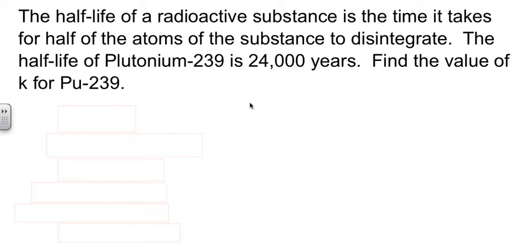So something you need to know about is called the half-life. Whenever you have a radioactive substance, that thing is deteriorating, disintegrating over time. And the half-life is the amount of time it takes for half of the atoms to disintegrate. Every radioactive material has a different half-life. For plutonium-239, the half-life happens to be 24,000 years. So our job is to find the value of k for plutonium-239.